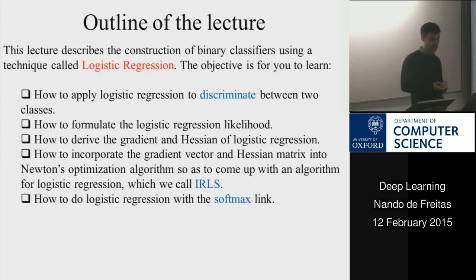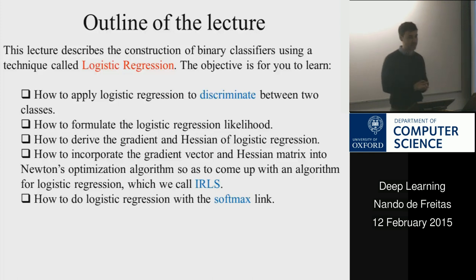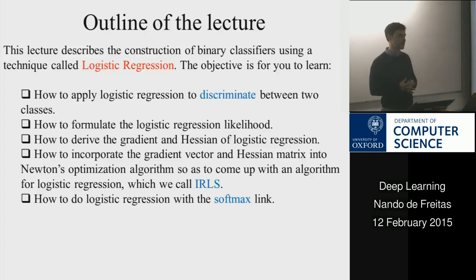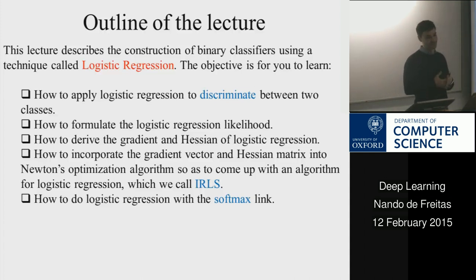So we're going to cover this model and see how it works in this lecture. In particular, how we formulate its likelihood just like we did for linear regression. We're going to look at the gradient and the Hessian. And we're going to write it in two different ways: one using the logistic function, which I will introduce soon, and something called the softmax function, which you probably encountered in your practical.